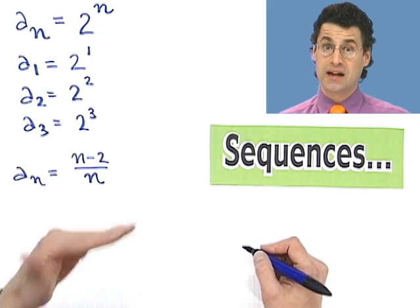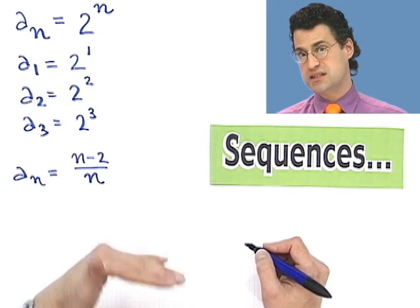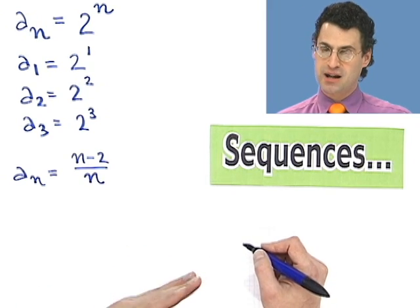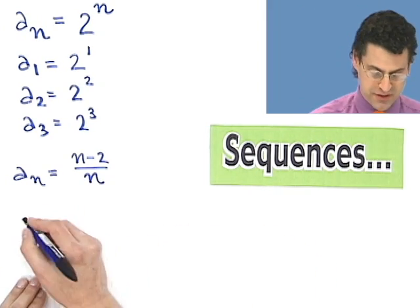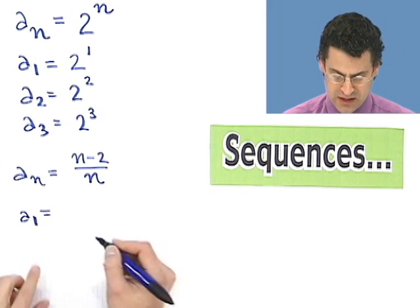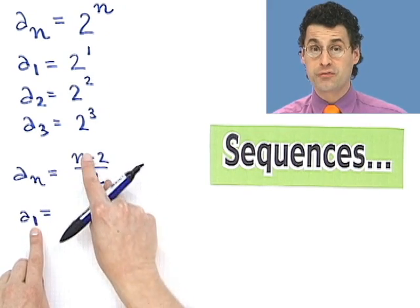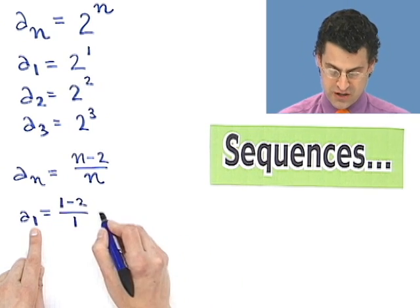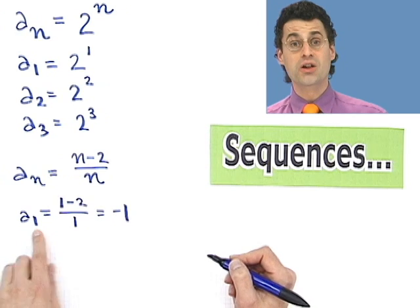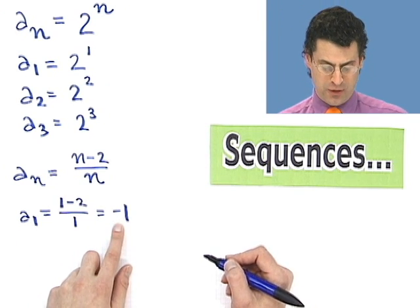But now let's see if we can write down the first few terms in this sequence. Since the natural numbers come in a particular order, 1, 2, 3, and so forth, this sequence comes in a particular order. a1 would equal what I get when I plug in 1 for n. So I'd have 1 minus 2 over 1, which equals negative 1. So the first term in my sequence is negative 1.